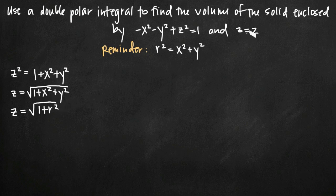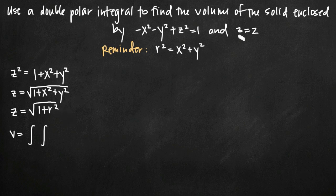We don't need to change z equals 2 into polar form because there are no x or y variables on the right-hand side. Now we have two equations to put into our integral, but we also need to find our limits of integration. We'll start writing our integral for volume and leave room for the limits. The question is whether we subtract the square root of 1 plus r squared from 2, or the other way around — we need to figure out which is larger over the interval we'll be integrating.